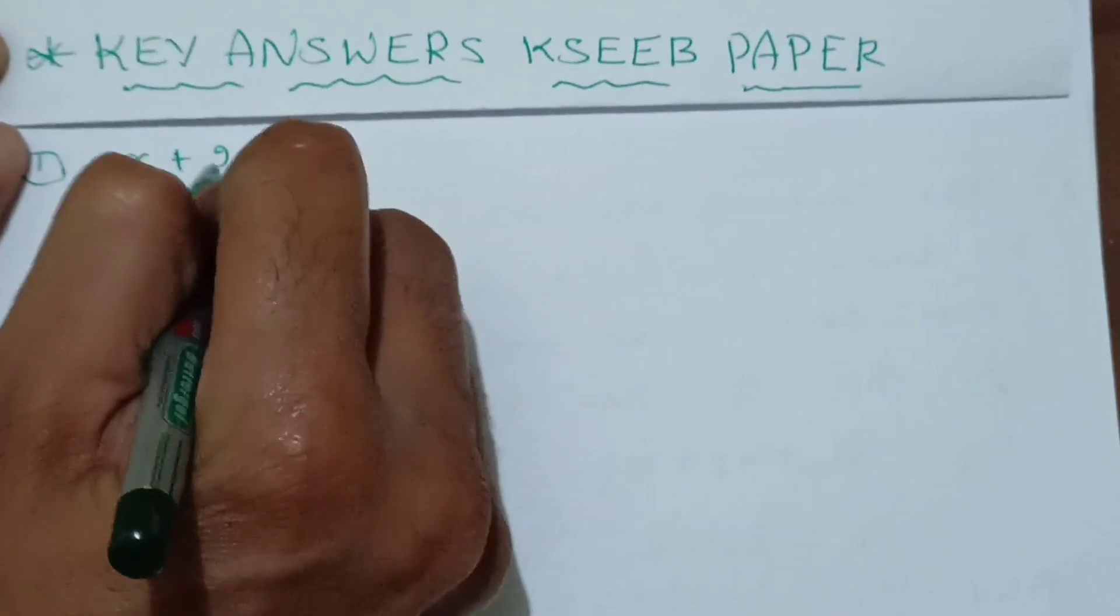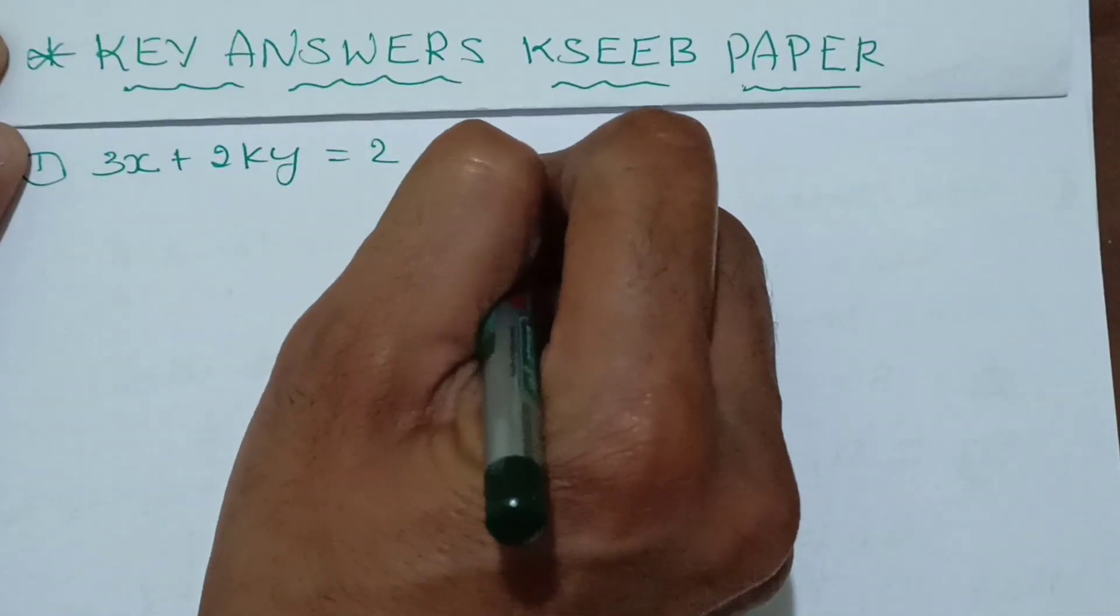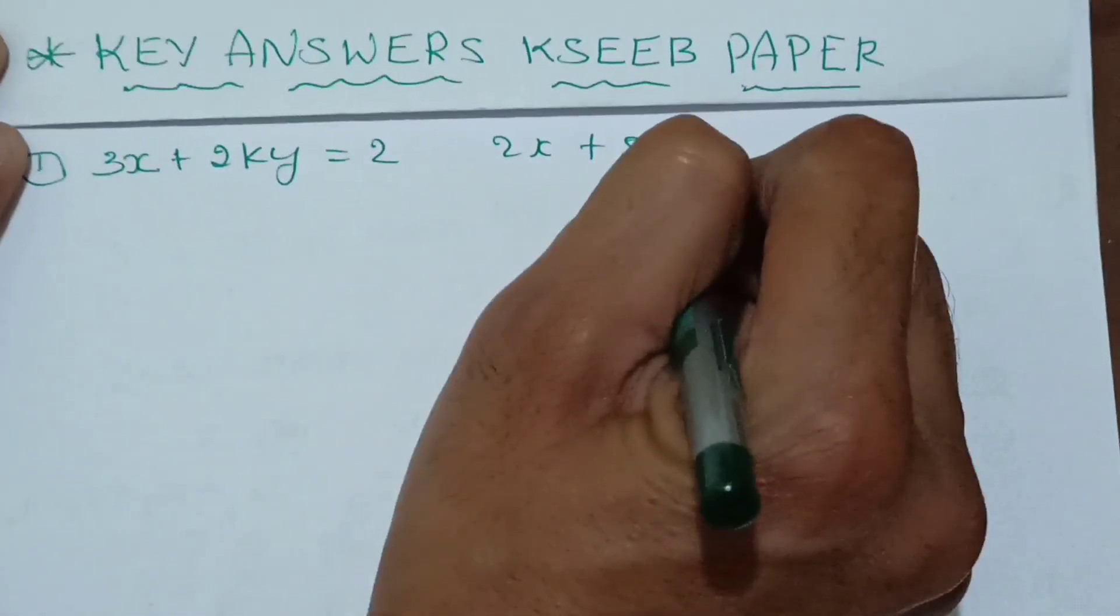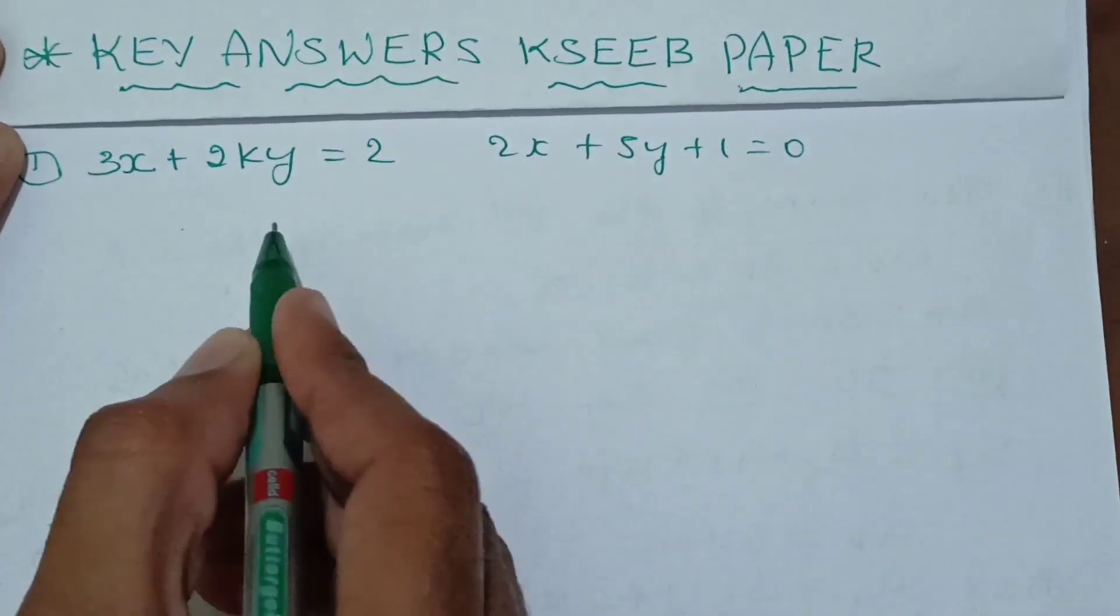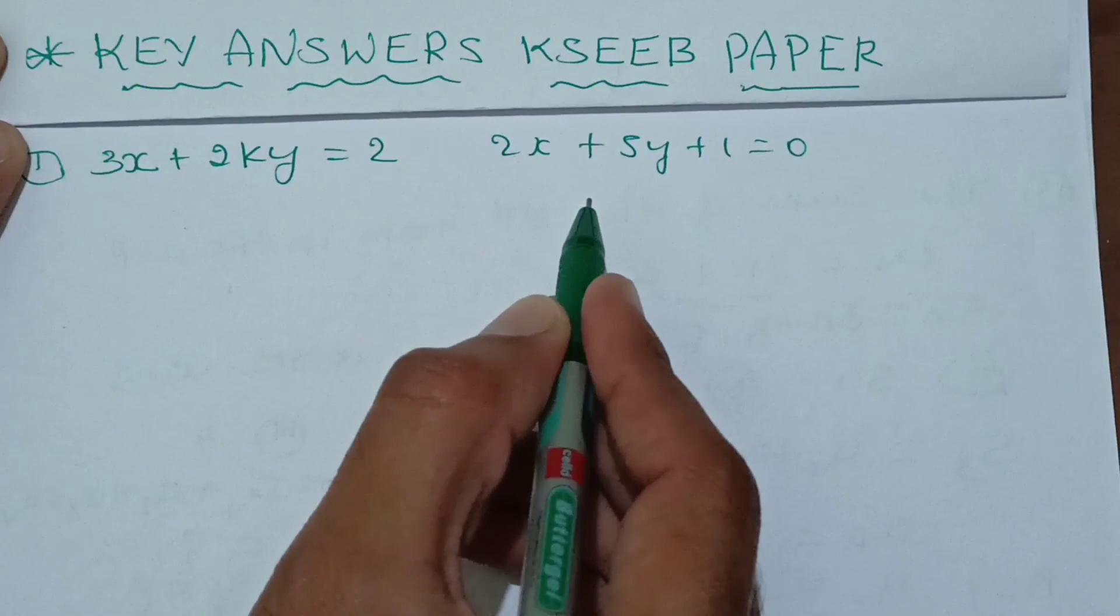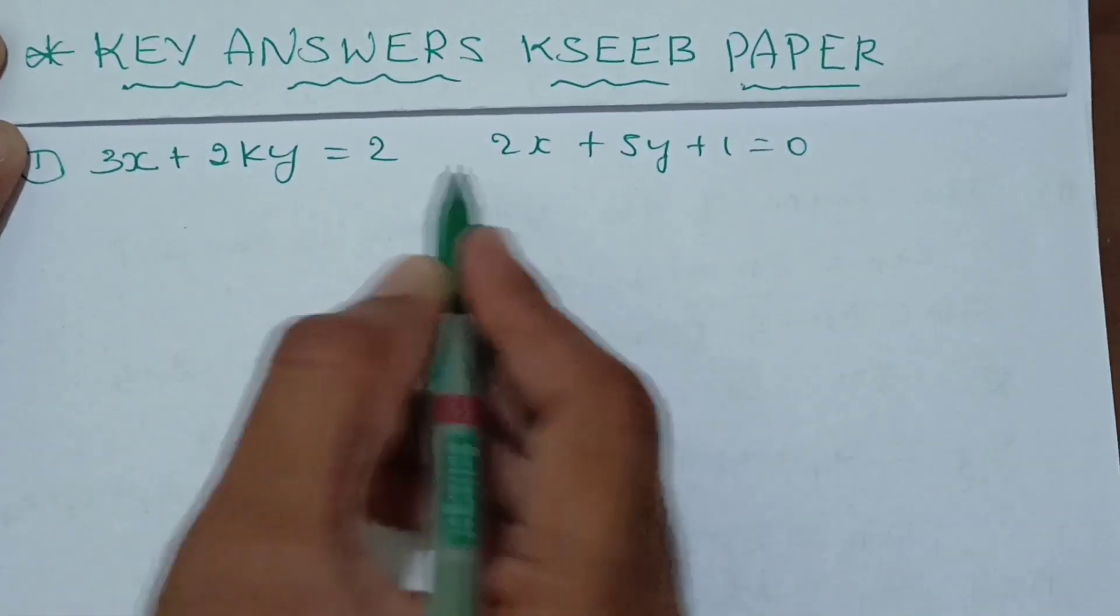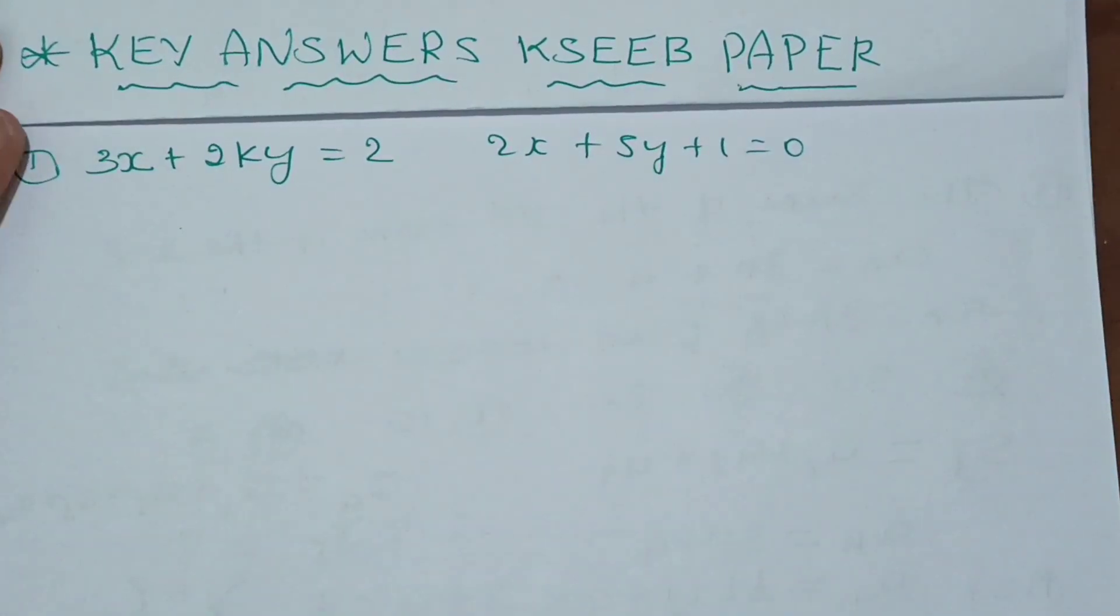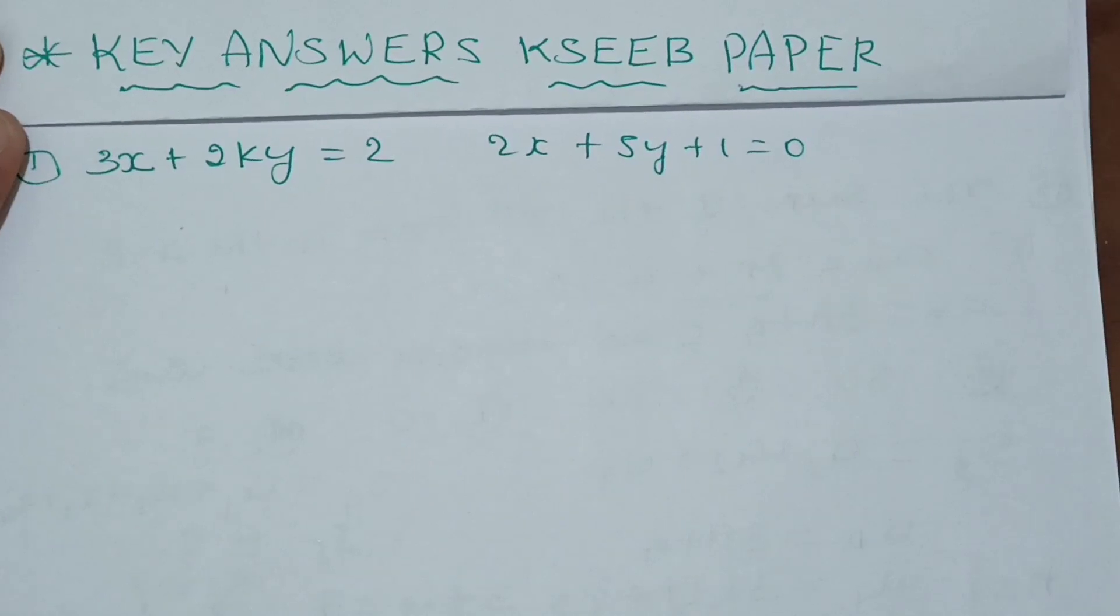3x plus 2ky equals to 2, this is equation 1. 2x plus 5y plus 1 equals to 0, this is equation 2. You need to find the value of K. For parallel, there will be 3 conditions.